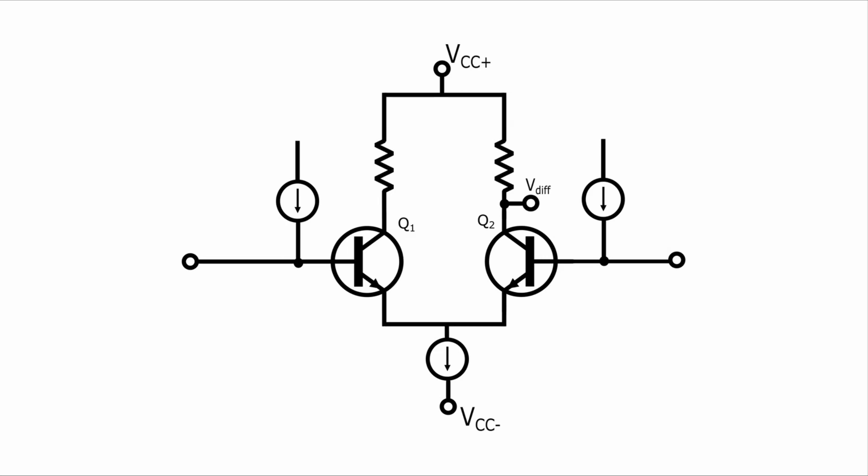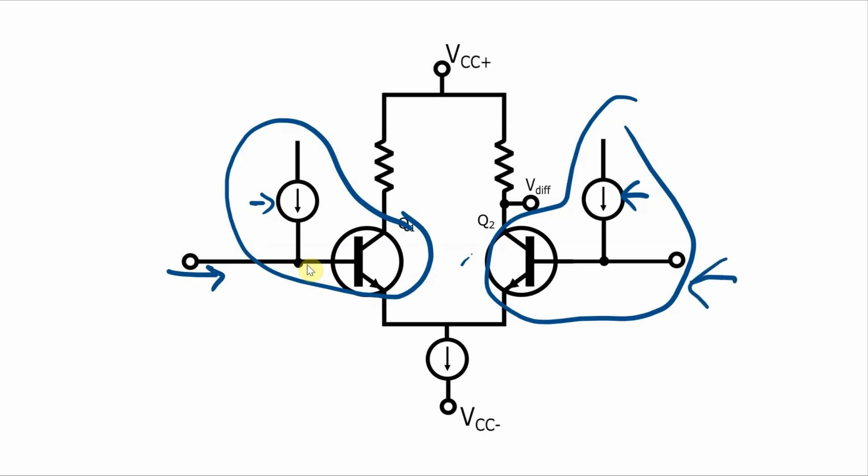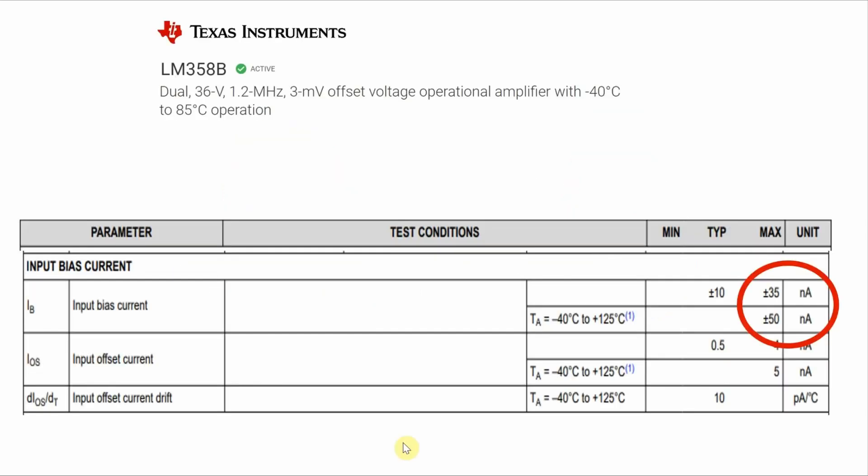One method that op-amp designers do use to internally compensate for the input bias current is by adding current sources at the input bases that are inside the op-amp and provide biasing current for the input transistors Q1 and Q2. The current sources won't be the exact values required by the transistors, so there will still be some current that needs to come in through the inverting and non-inverting terminals, but it's going to be a lot smaller than if you didn't have those current sources. And since that current source might be a little less than needed or a little more than needed, the biasing current from outside the op-amp might be positive, but it also might be negative. And if you see a plus minus on a datasheet for the input bias current, that's an indication that there's probably a bias current compensation circuit inside the op-amp.